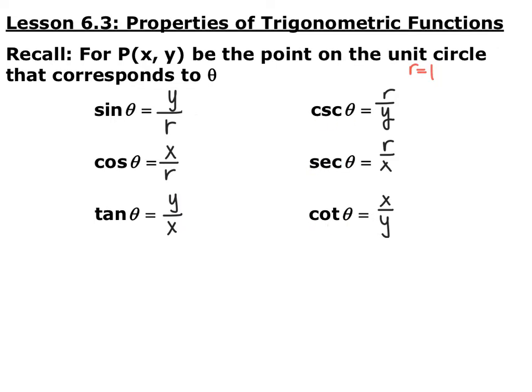If you have some point (x, y) and a radius of r — if you're on the unit circle, remember your radius is 1 — then sine of theta is y over r, cosine is x over r, tangent is y over x, cotangent is x over y, secant is r over x, and cosecant is r over y.